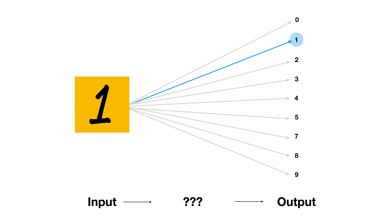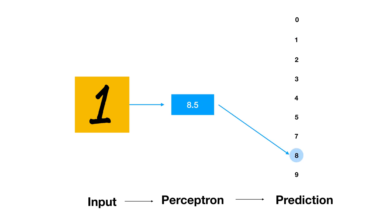One way you might have thought of is to just have the number be between 0 and 10 instead of 0 and 1, and basically round it down. So if it outputs 8.5, that's an 8; if it outputs 7.2, we predict the digit is a 7. For a number of reasons, that's not the normal way to do it.